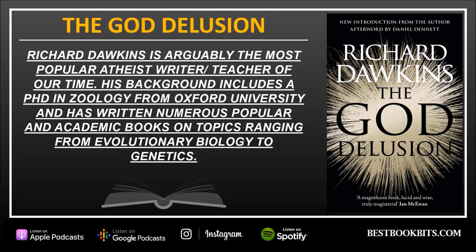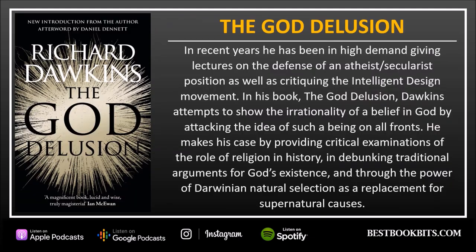BestBookBits.com brings you the book summary of The God Delusion by Richard Dawkins. Richard Dawkins is arguably the most popular atheist writer and teacher of our time. His background includes a PhD in zoology from Oxford University and numerous popular and academic books on topics ranging from evolutionary biology to genetics. In recent years he has been in high demand giving lectures in defense of an atheist and secularist position as well as critiquing the intelligent design movement.